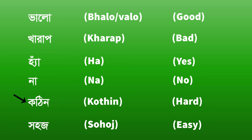Kothin. Hard. Kothin. Shohaj. Easy. Shohaj. The third pair: Kothin means hard, and Shohaj means easy.